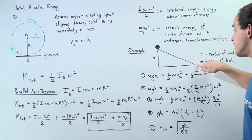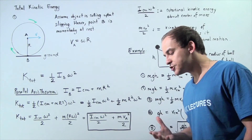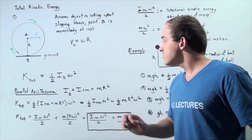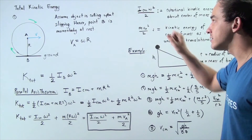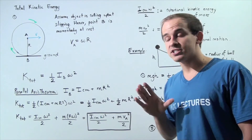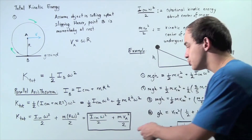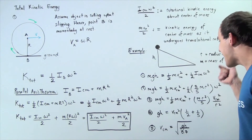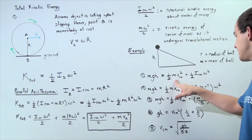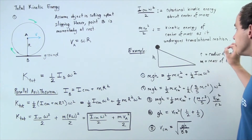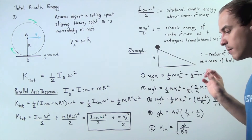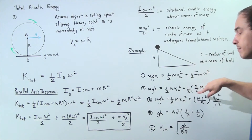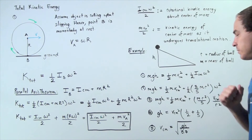After the object reaches the point where h equals zero, it has no gravitational potential energy. All the gravitational potential energy has been transformed into kinetic energy. Because the ball is rolling without slipping, it is both rotating and translating, so all the gravitational potential energy went into both types of kinetic energy. So mgh equals the rotational plus translational kinetic energies. For a solid sphere, the moment of inertia about the center of mass is two-fifths mr squared.